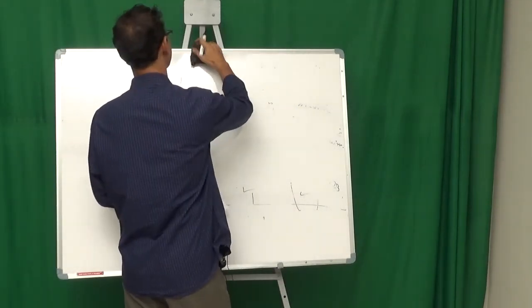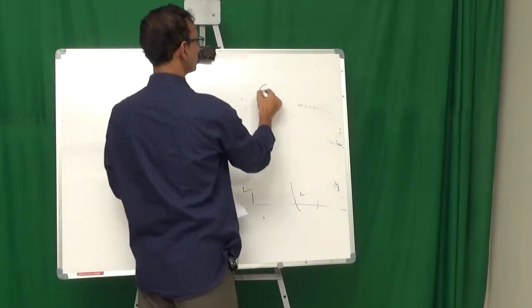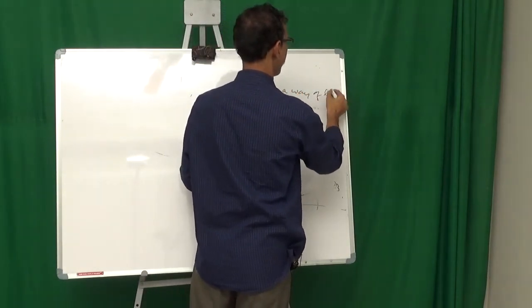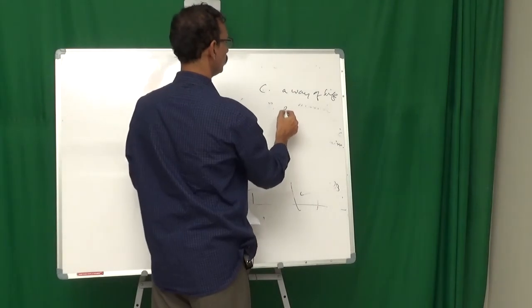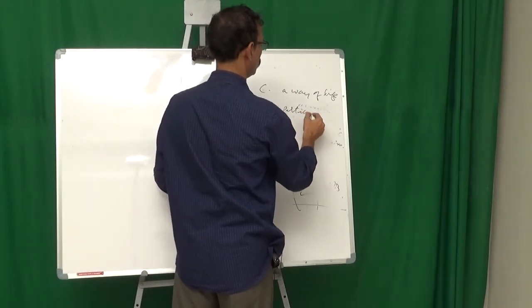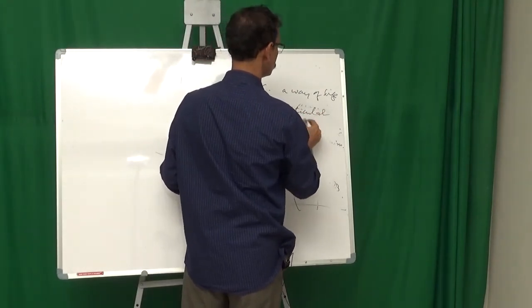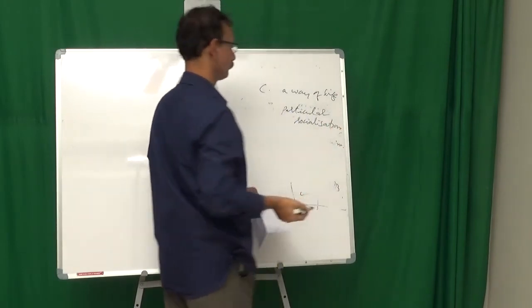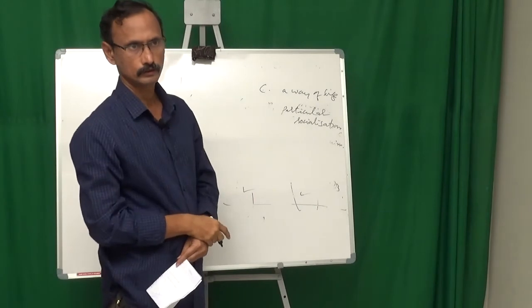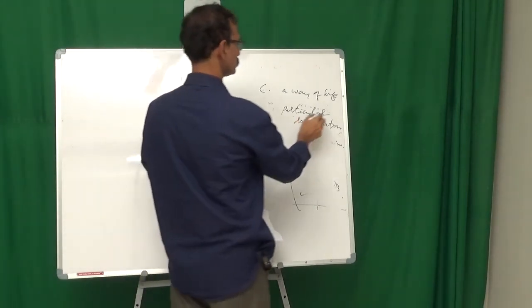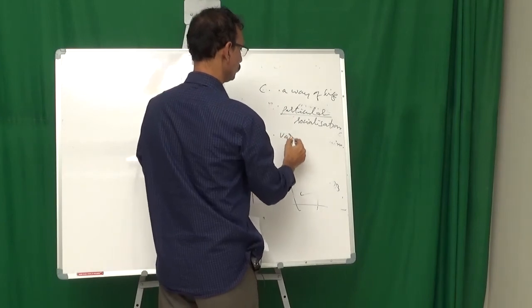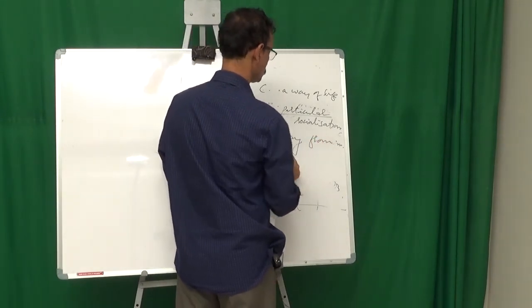Number one, culture is a way of life. Culture is particular socialization. Particular socialization which may vary from place to place.